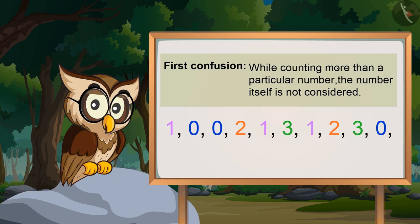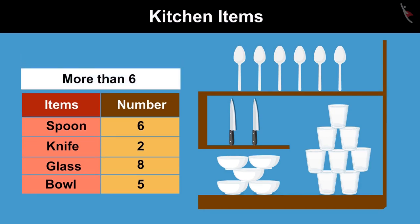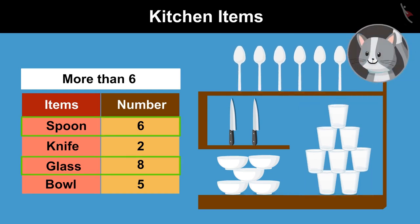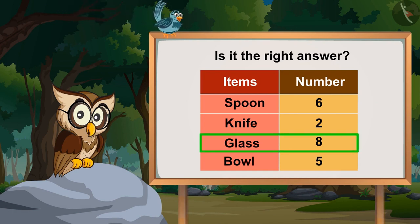Let's look at this example. Some kitchen items and their numbers are shown here in a tabular form. Which items are more than 6 in number? Spoon and Glass. Is it the right answer? I think just the glass, because you asked more than 6, therefore we cannot consider 6.